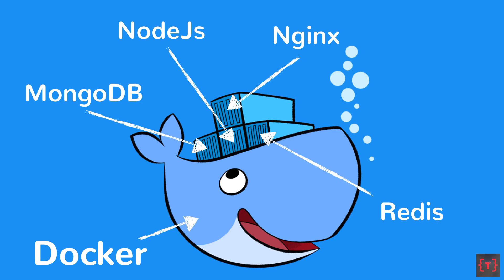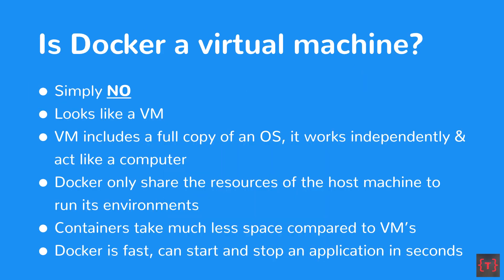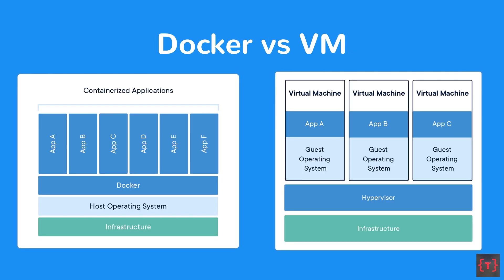One of the most asked questions about Docker is whether it is a virtual machine. In simple words, the answer is no. Though it looks like a virtual machine, a virtual machine includes a full copy of an OS, whereas Docker only shares the resources of the host machine to run its environments. It's a very lightweight image compared to a virtual machine, so containers take very less space and Docker is very fast — it can start and stop an application within seconds.